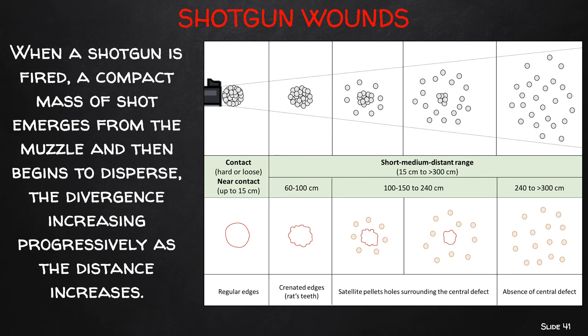In intermediate to distant range shotgun wounds, there is no soot deposition, but stippling can still be present. As the range of fire increases, the pellets start to disperse and spread out, creating a more extensive spread of individual wounds around the body. In very distant shots, there is usually no central defect — instead, you can see single small round defects due to individual pellets penetrating the skin.